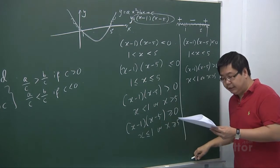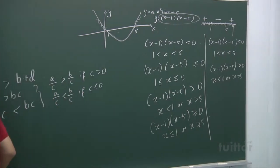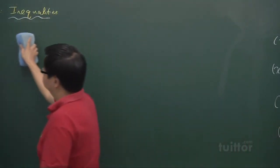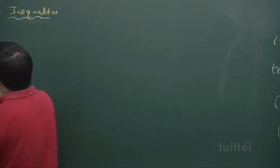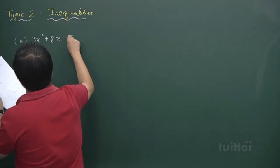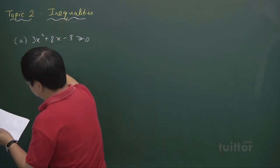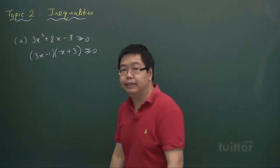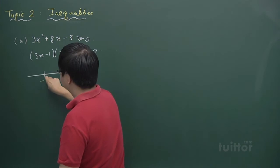Now let's look at three examples of how to solve inequalities. The first problem asks us to find the range of values of x satisfying the inequality. To solve it, we first factorize, then identify the roots of the equation, which are minus 3 and one third.